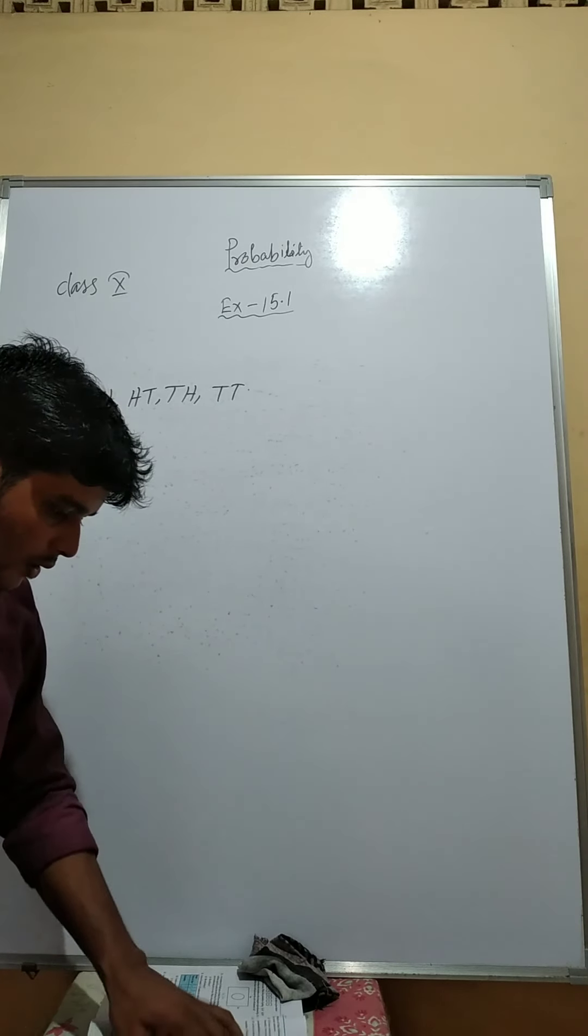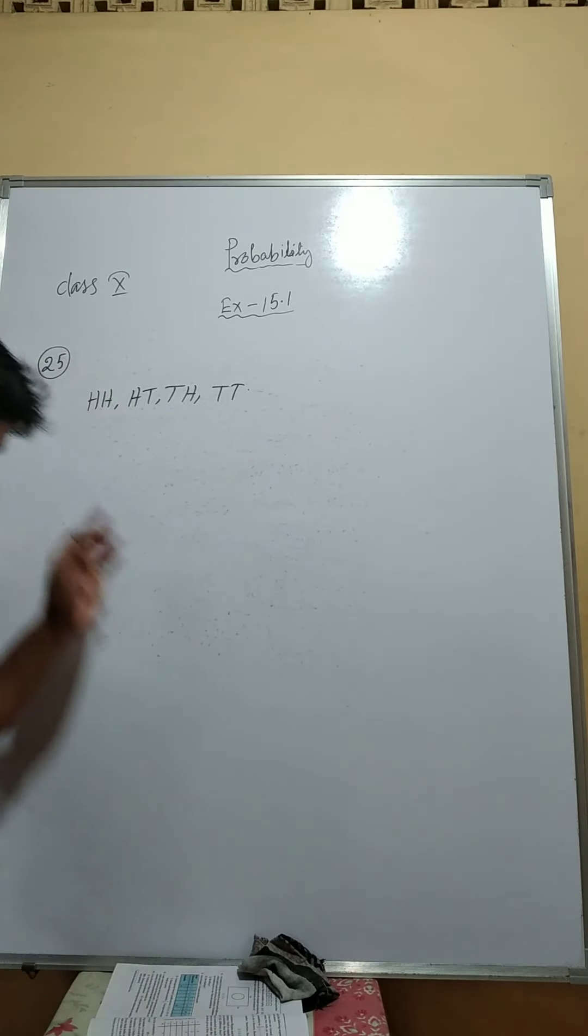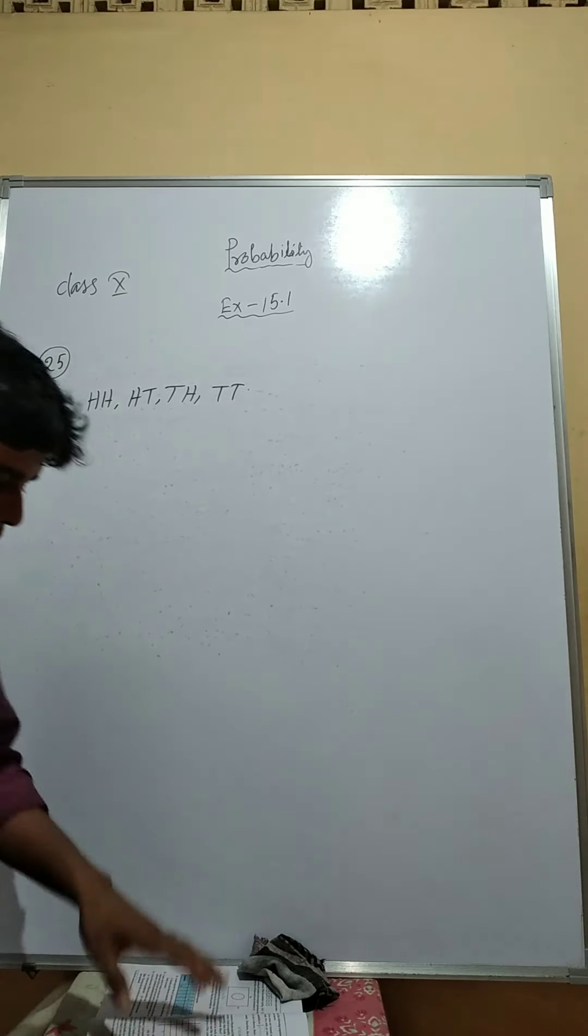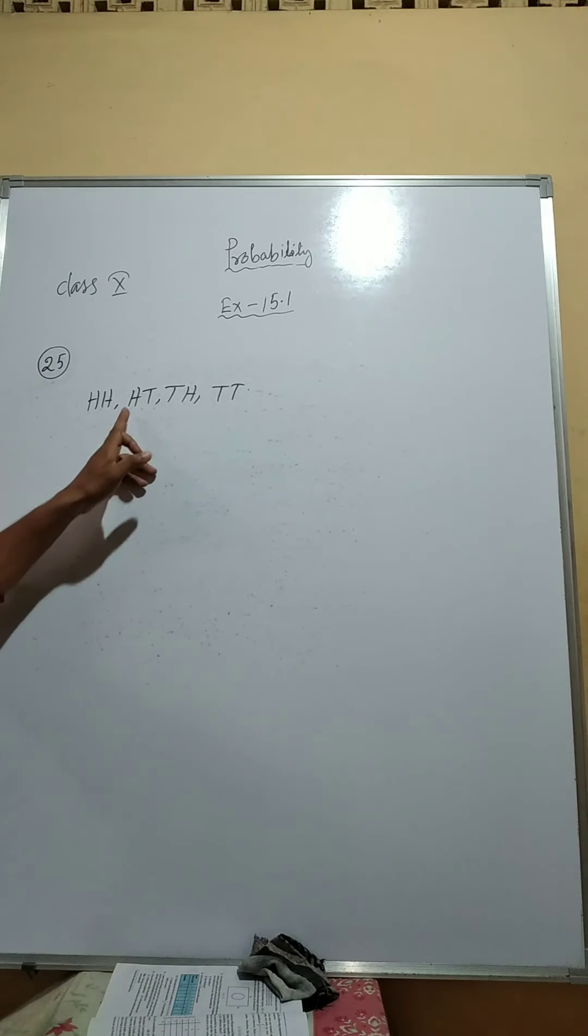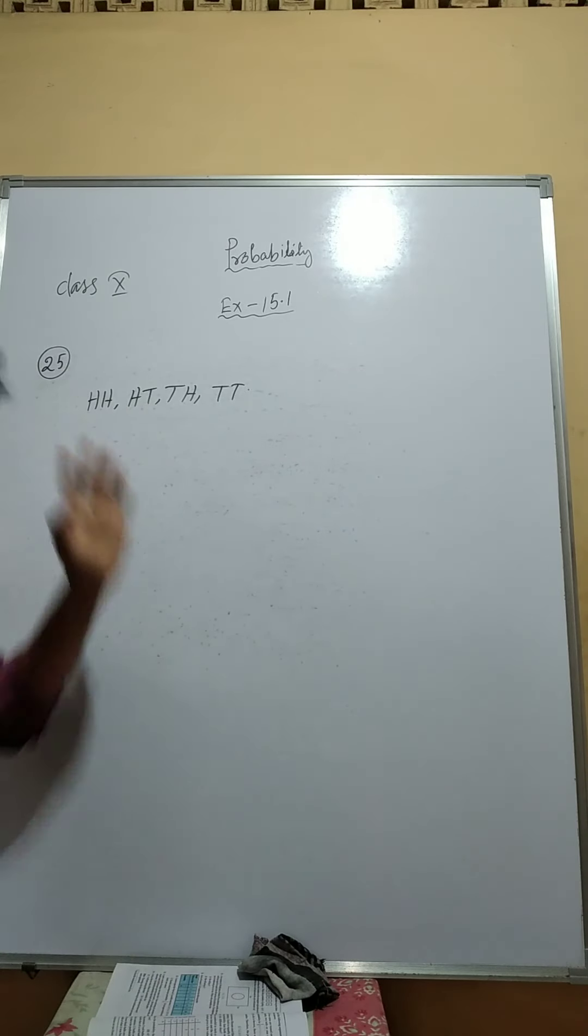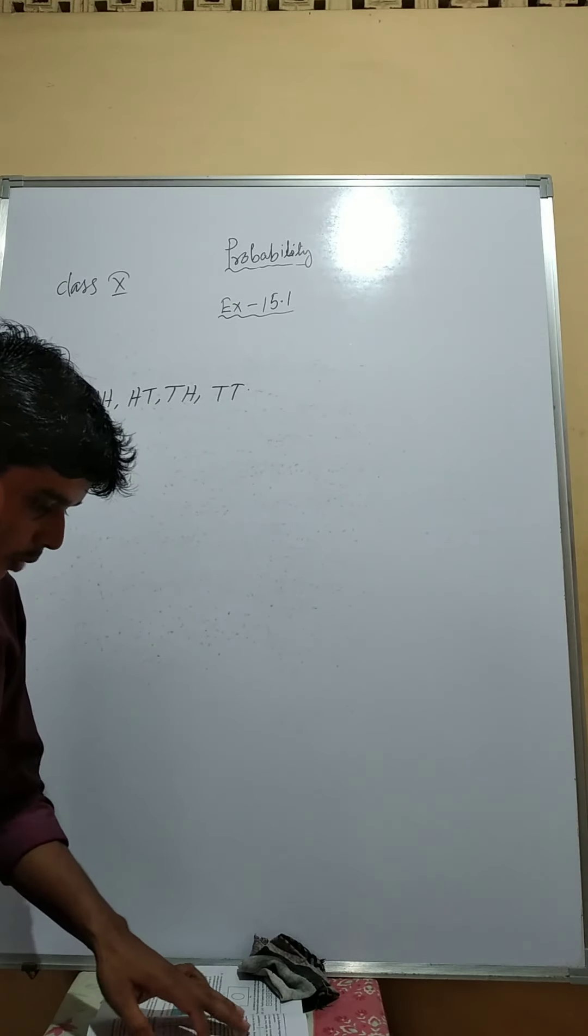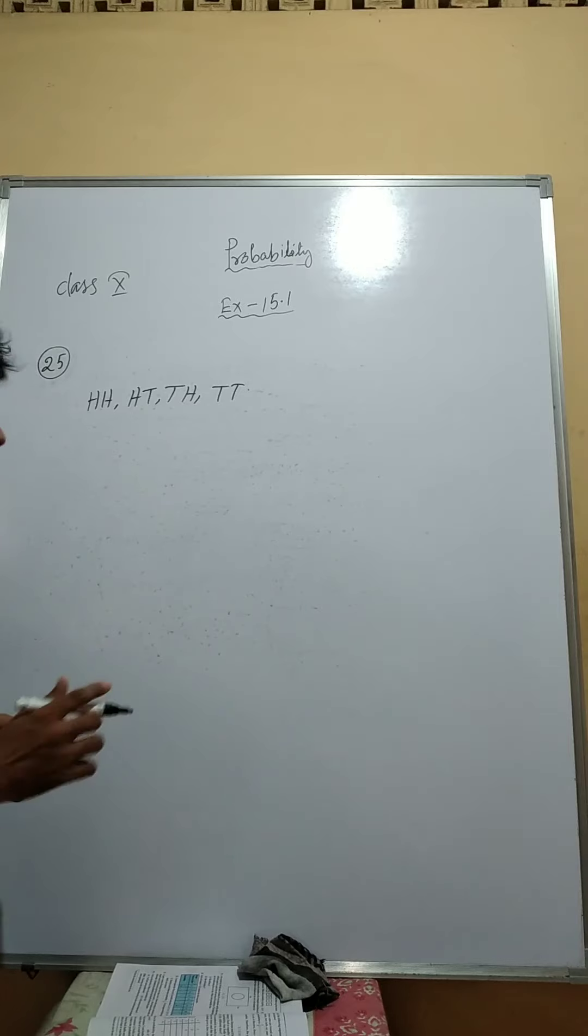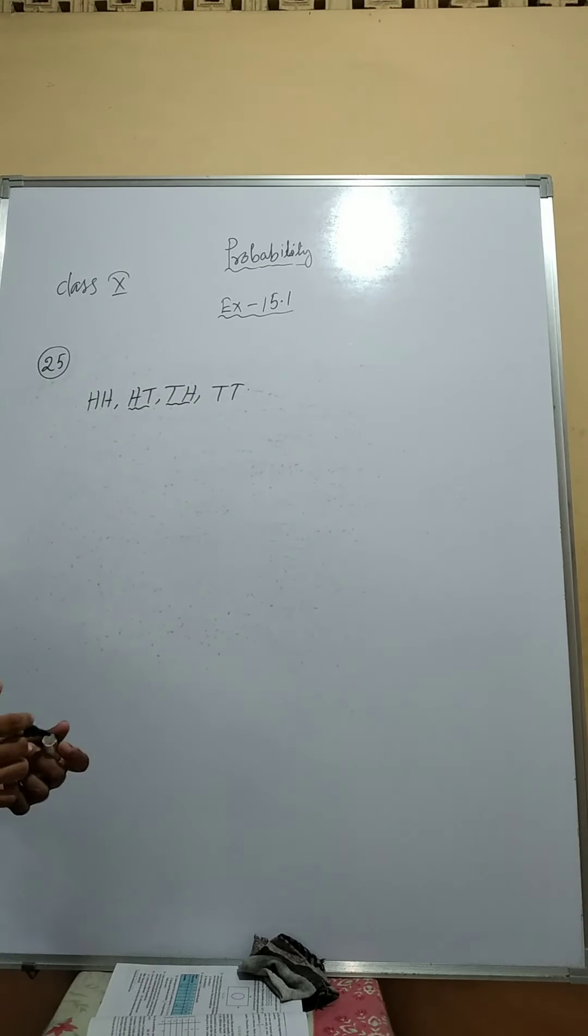They have told, if there are three possible outcomes: two heads, two tails, or one of each. One of each means head-tail or tail-head, these two. Therefore, for each of these outcomes, the probability is 1 by 3. Is it possible? Because the probability will be 1 by 3 only when these two are equally likely outcomes.